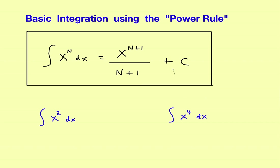Let's take a look at the concept of integration, or finding antiderivatives. What we've done in the past is given a function, find its derivative. So if we had something like x to the fourth as the original function, then its derivative would be 4x cubed — you move the old exponent down in front and reduce the power by one.